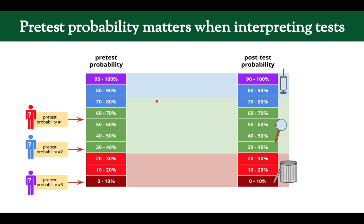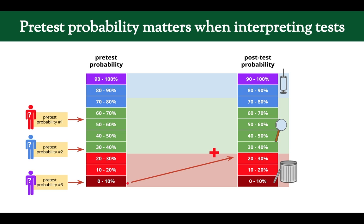Now let's look at how this works with interpreting tests across three patients. For the first patient with low pre-test probability, a positive test raised it some but we're still in the trash-it zone — it didn't change management at all. This test was unnecessary because the patient was below the testing threshold to begin with, so we shouldn't have ordered it.